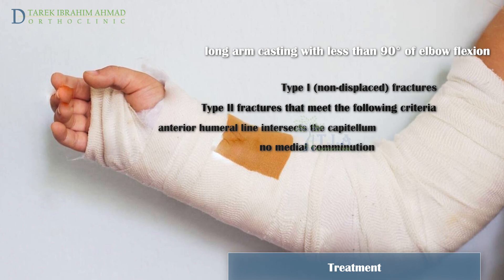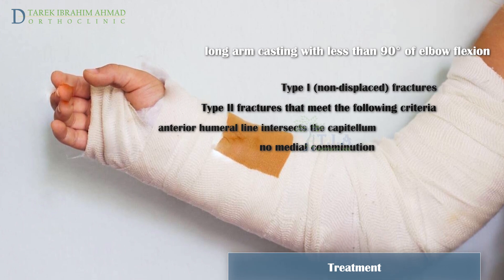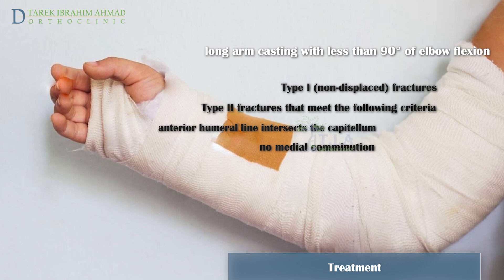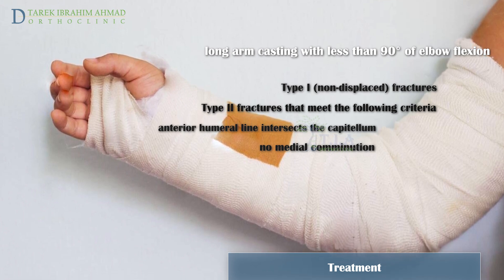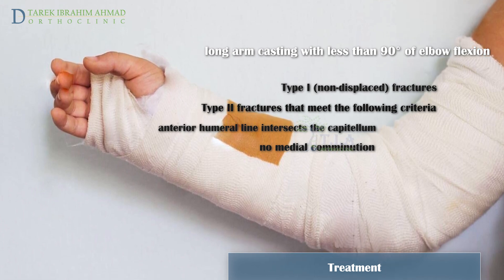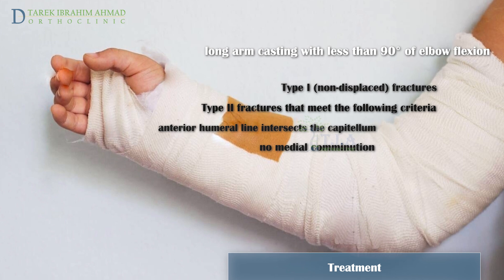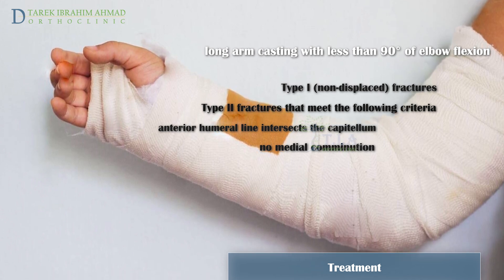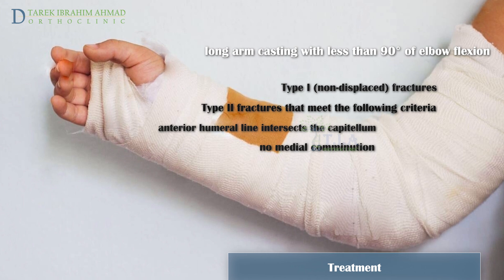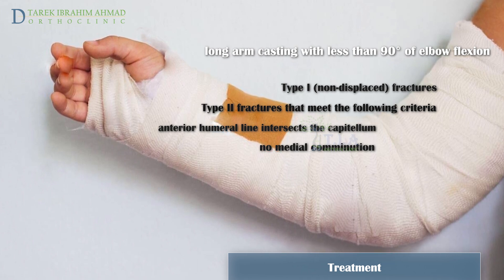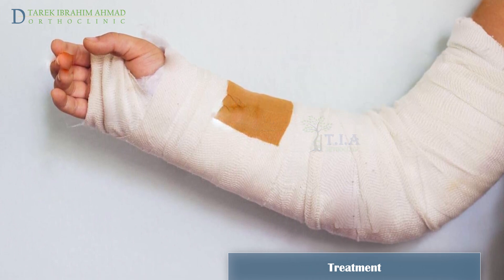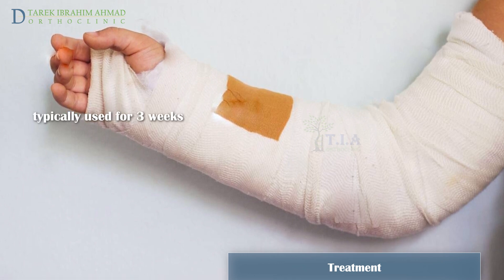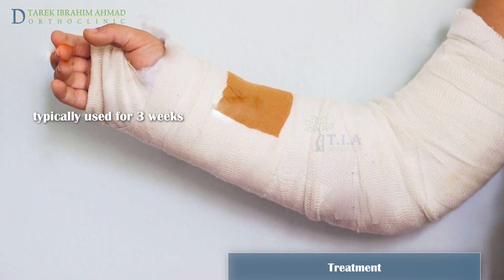The forearm should be in neutral position with respect to supination and pronation. Circumferential casting and extremes of flexion should be initially avoided in most cases to decrease the incidence of compartment syndrome and vascular compromise. Neurovascular status should be checked before and after splinting. The typical duration of immobilization for this type of fracture is three weeks.